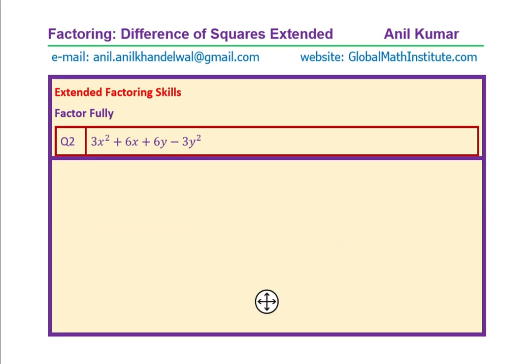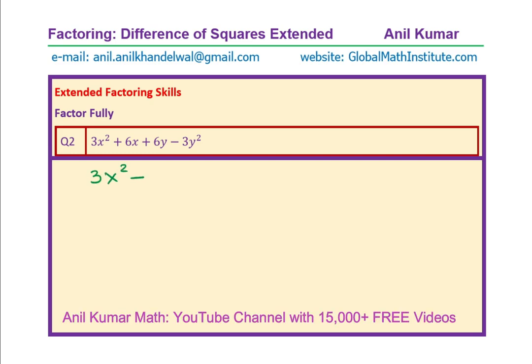Now, let's go to question number 2. Again, we have four terms. How do we factor this? The question 2 is factor fully 3x² + 6x + 6y - 3y². Let's rewrite the question. It is 3x² + 6x + 6y - 3y². Now, we really do not have a perfect square. So, in this case, one way is I could think about group factoring.